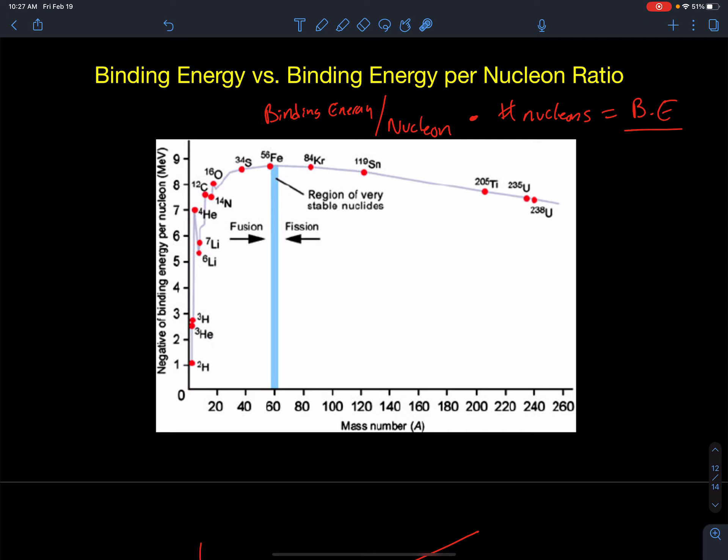Often you're going to be given this graph on an exam, and they want you to calculate the binding energy using the graph. Well, all you'd have to do is take what you read on this side, like 8.8 mega electron volts, multiply it by 56, and that'll give you the total binding energy of that nucleus.